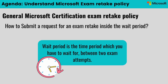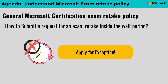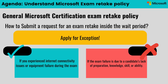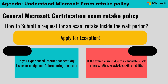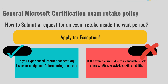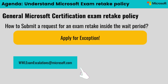Now let's understand how to submit a request for an exam retake inside the wait period. The wait period is the time you must wait between two exam attempts — for example, 14 days before the third attempt if you failed the second. If you don't want to wait those 14 days, you may apply for an exception. As per Microsoft policy, you may request an exception if you experience internet connectivity issues or equipment failure during the exam. Exceptions will not be granted if the failure is due to the candidate's lack of preparation, knowledge, skill, or ability.